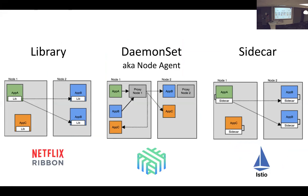There are a couple of different ways you can do service mesh. The first way is where you put the libraries right into the applications to get all this functionality. There's also the Linkerd approach, where you have a node agent. On Kubernetes, you run a daemon set of Linkerd things, and your applications talk to Linkerd, which takes care of routing to the right version of the service, providing retry logic, and all that sort of stuff.